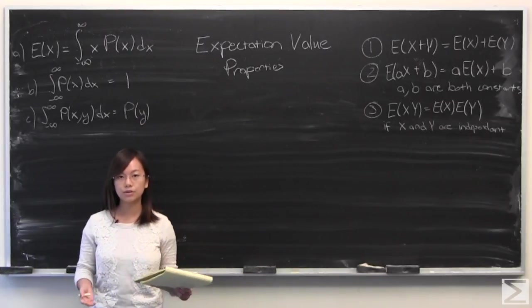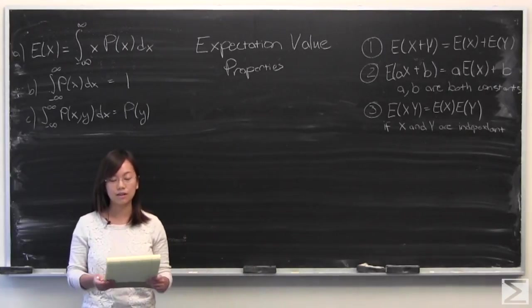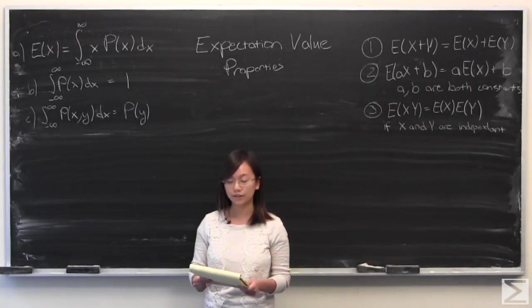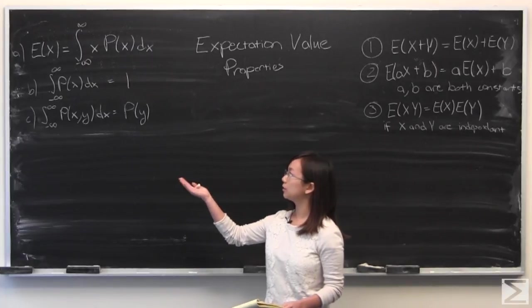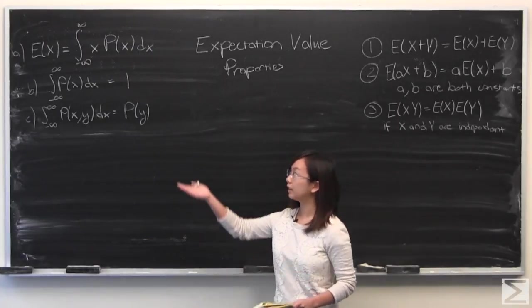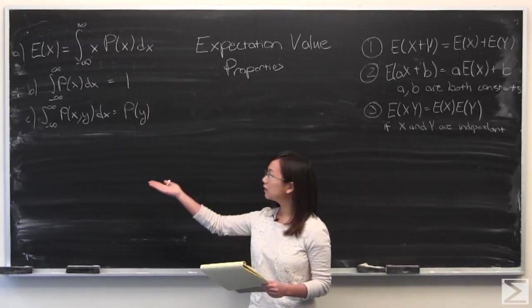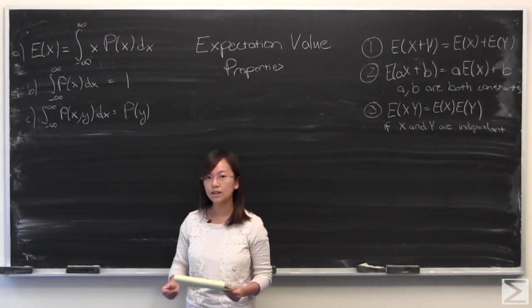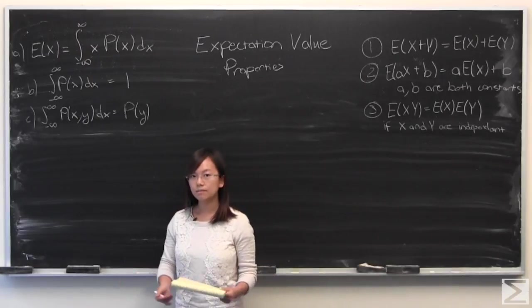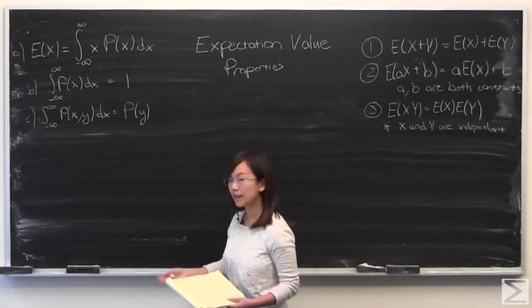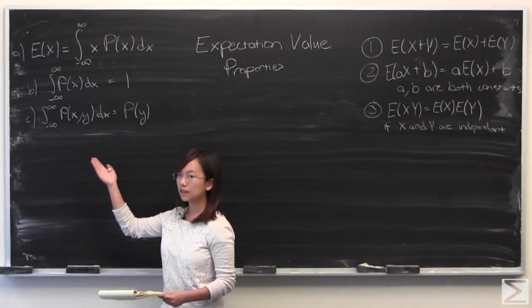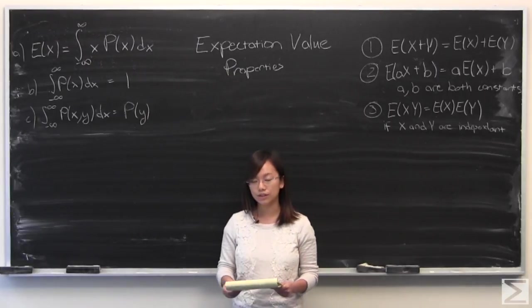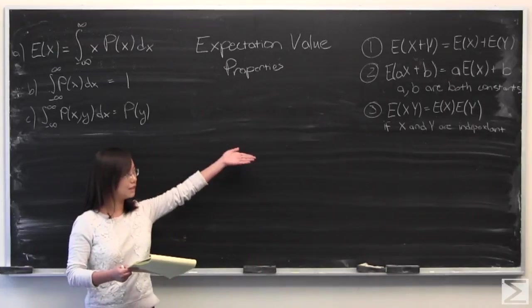For this proof I'm using the continuous case, but if you want to do the discrete case, the process is almost exactly the same. I'm going to start by directing you towards these three properties up here which were discussed in earlier videos. Expectation value of X equals the integral from negative infinity to positive infinity of x times the probability density function dx. A probability density function integrated from negative infinity to positive infinity must equal 1. If you have a joint probability density function p(x,y), if you integrate dx out of that, you get the probability density function of y. Using that, I will prove these three properties.